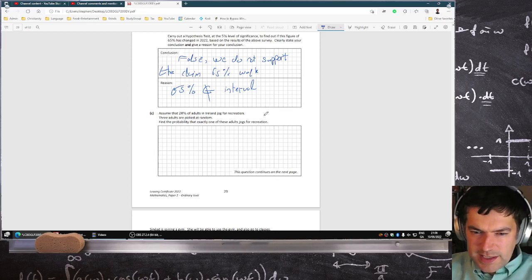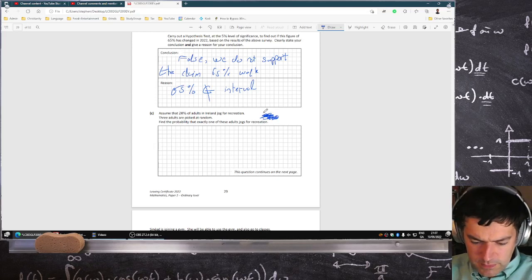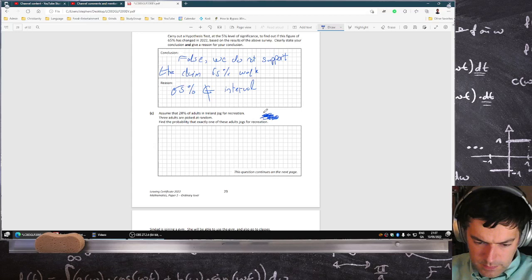Yeah, so that's 300 because 20% of 1500 is 300. Three adults are picked at random. Find the probability that exactly one of these adults goes for a jog. I think this is a Bernoulli one, actually. No, it's not.